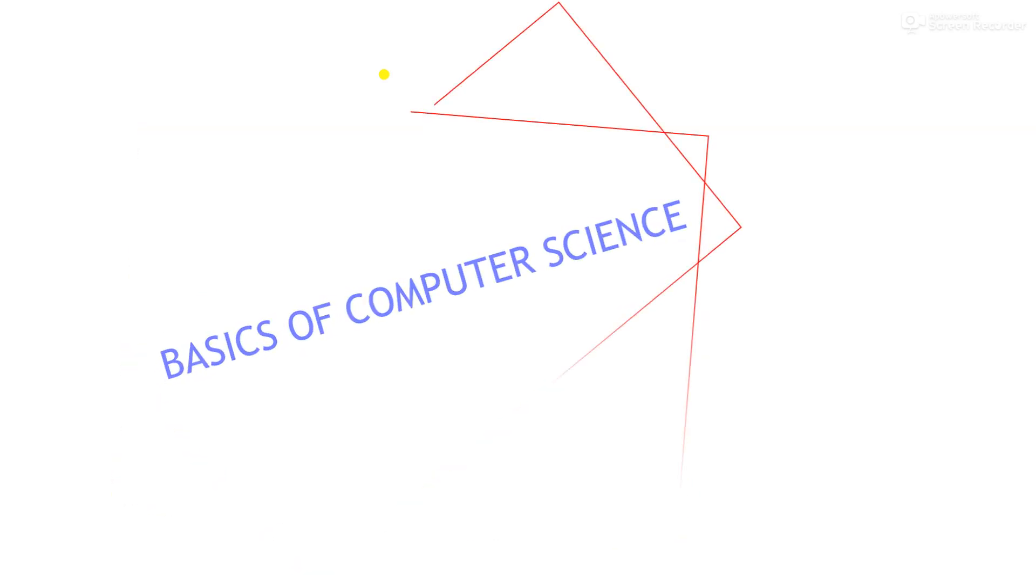Hello everyone, welcome to your channel Basics of Computer Science. Today we have a numerical problem from science subject class 9. The question is: a train accelerates from 36 km/h to 54 km/h in 10 seconds. Find out its acceleration and the distance traveled by the train. First, we will write the data we have in this question.